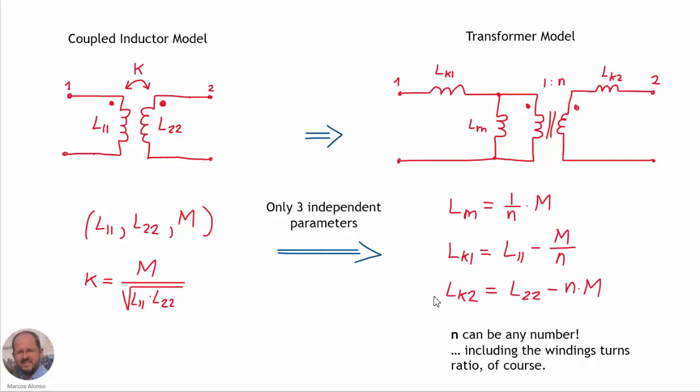For the transformer model we have four parameters but only three expressions, so in principle there are infinite solutions to model the coupled inductor using the transformer model. We can fix any of the four parameters and calculate the other three. The turns ratio is our degree of freedom — we can use the actual winding turns ratio or any other value, and the model will still be equivalent to the coupled inductor model.